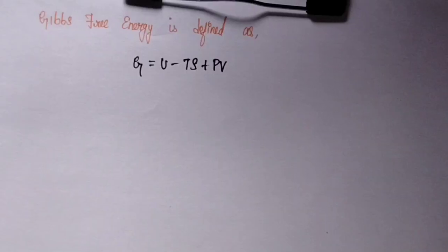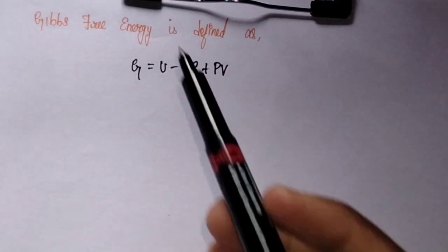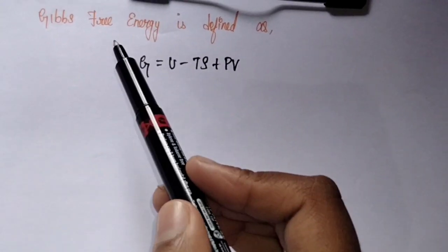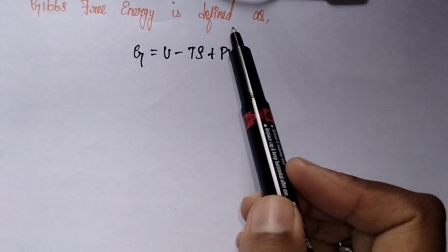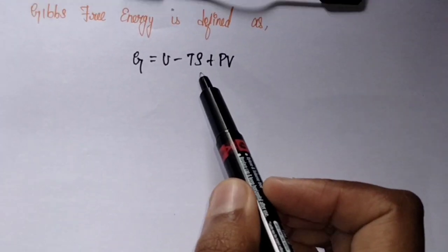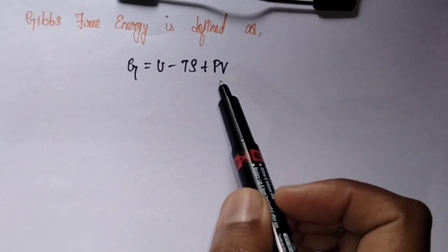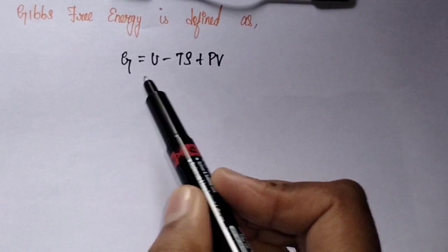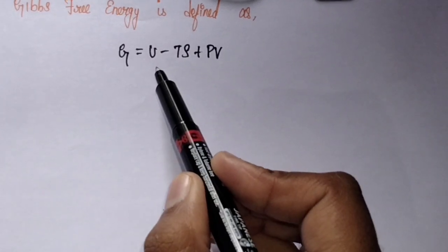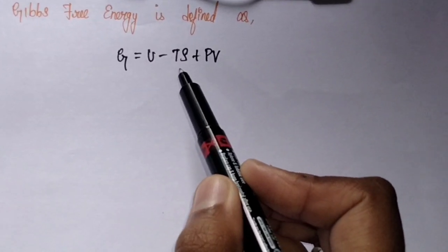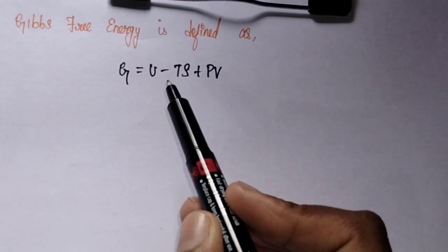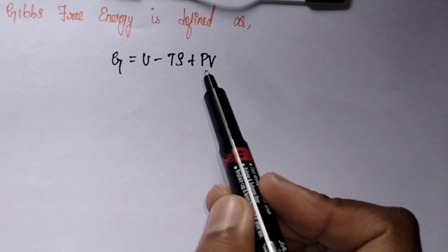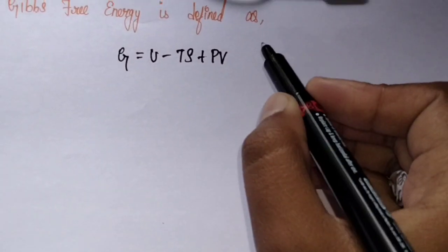We can derive the equation for Gibbs free energy. Gibbs free energy is defined as G equals U minus TS plus PV, where G is Gibbs free energy, U is internal energy of the system, T is temperature of the system, S is entropy of the system, P is pressure, and V is volume. Consider this as equation number one.